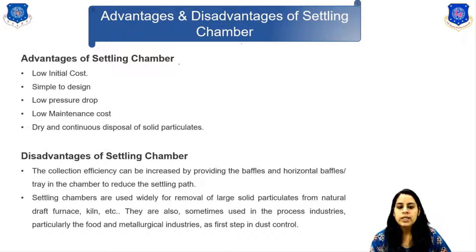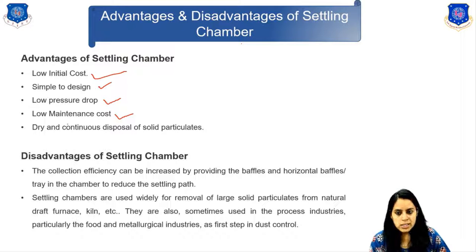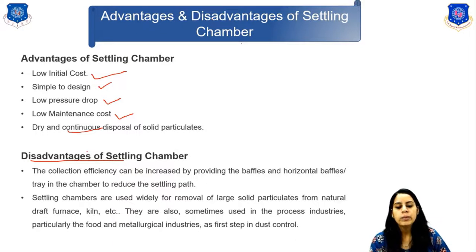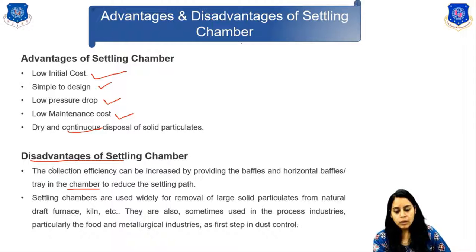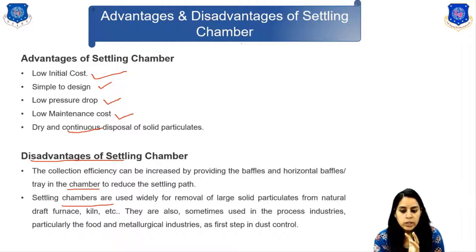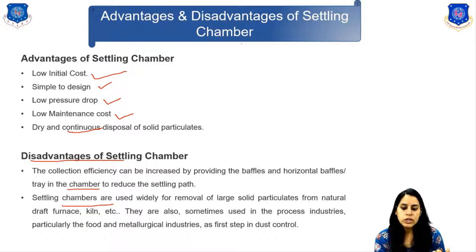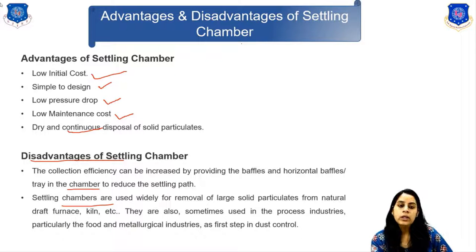The advantages of the settling chamber include low initial cost, simple design, low pressure drop, low maintenance costs, and dry continuous disposal of solid particles. The collection efficiency can be increased by providing horizontal baffles in the chamber to reduce the settling path. Settling chambers are widely used for removal of large solid particles from natural draft furnaces, and in food and metallurgical process industries as a first step in dust control.